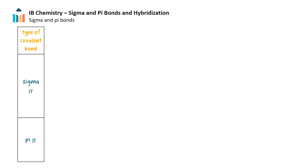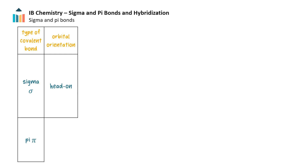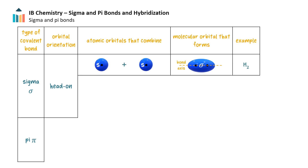Sigma and pi bonds are types of covalent bonds that describe how atomic orbitals overlap or combine to form a bond between atoms. A sigma bond, indicated by the Greek letter sigma, forms from the head-on overlap of atomic orbitals along the bond axis connecting two nuclei.